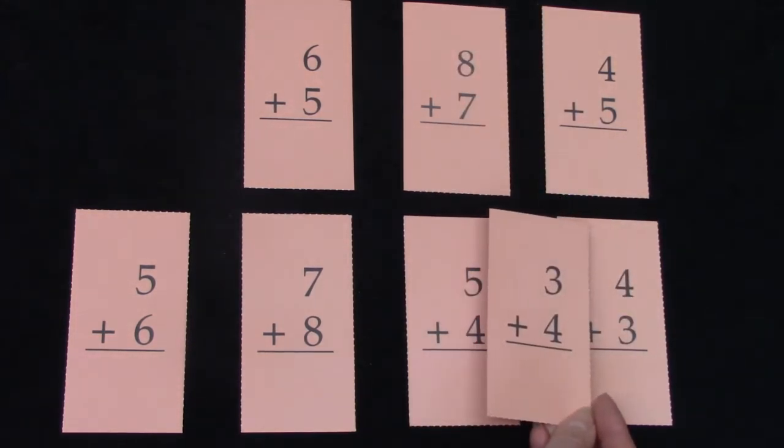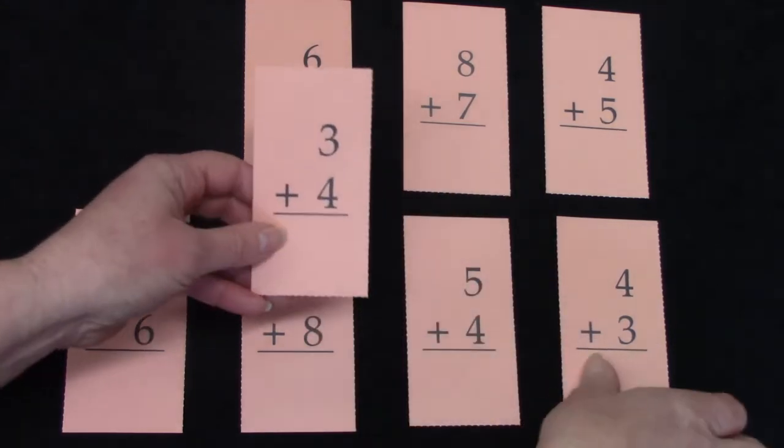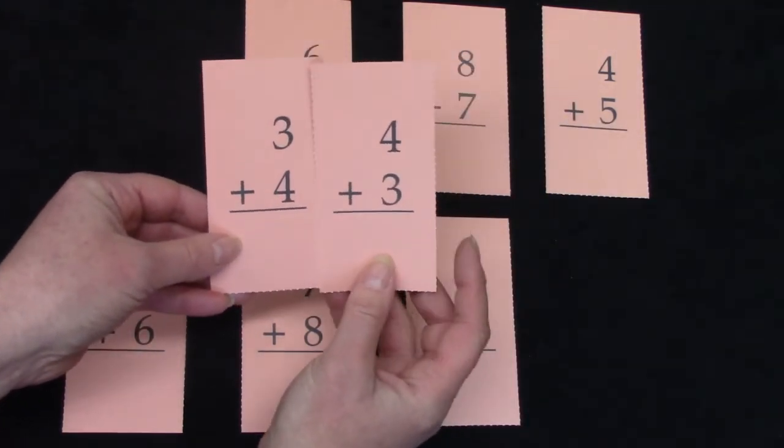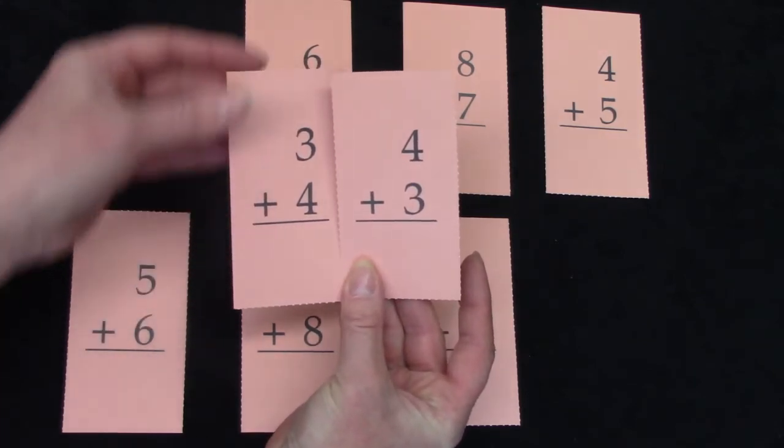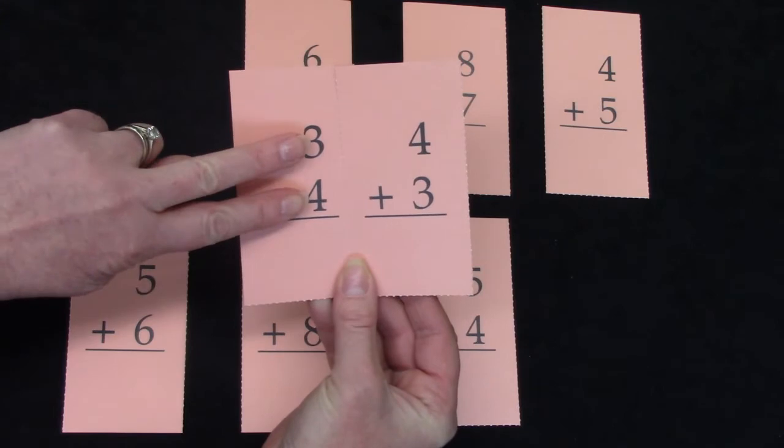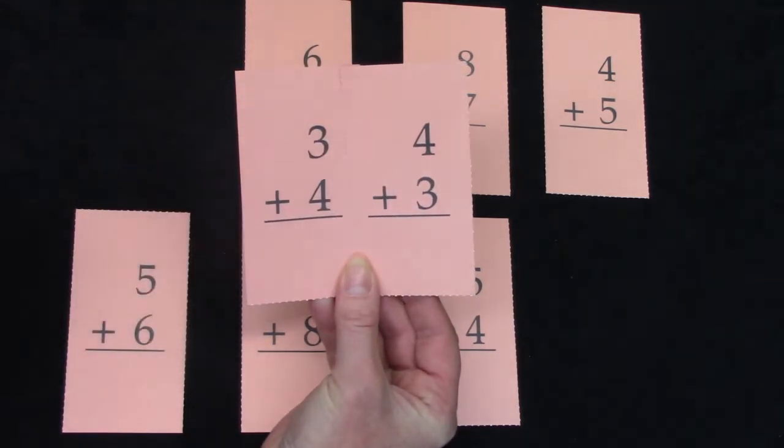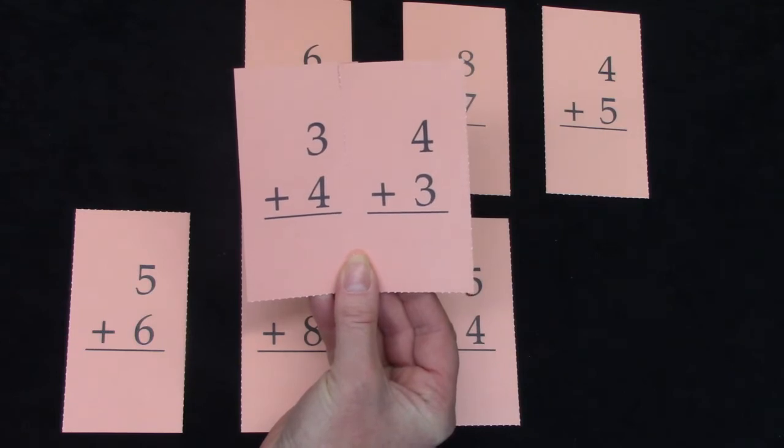Oh, wait a minute. 3 plus 4 and 4 plus 3 are switcheroo facts. We've just taken the numbers and switched them. These are going to have the same answer. Let's take a closer look.